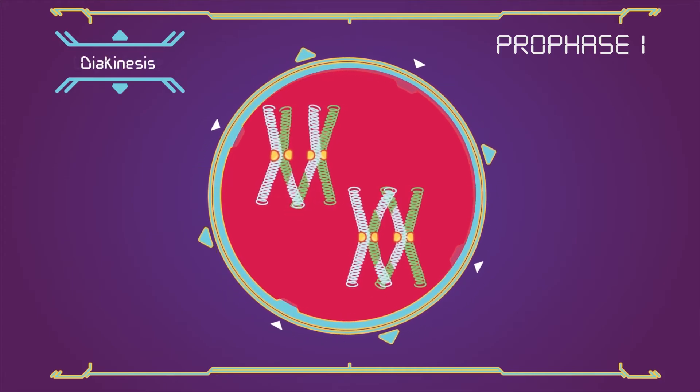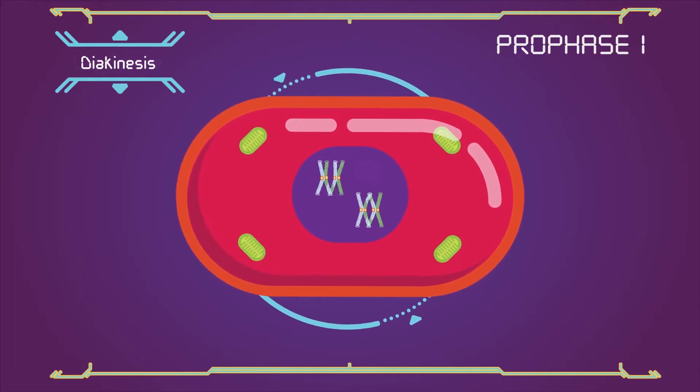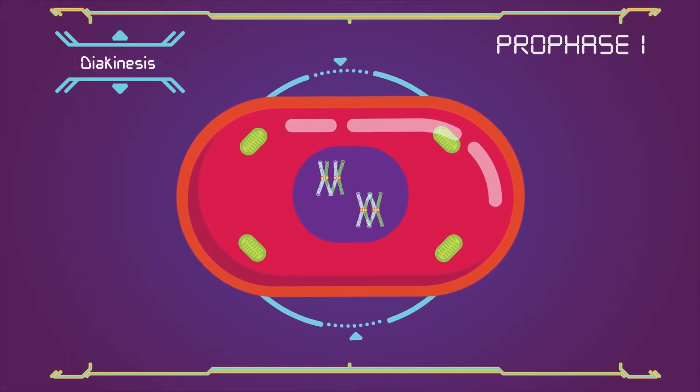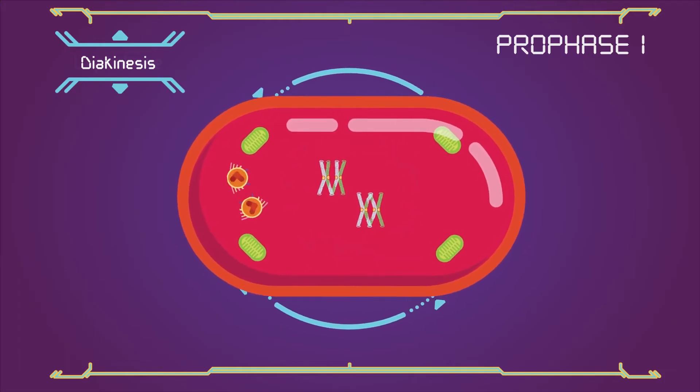Diakinesis. It closely resembles prometaphase of mitosis. The nucleoli disappear, the nuclear membrane disintegrates into vesicles, and the meiotic spindle begins to form.